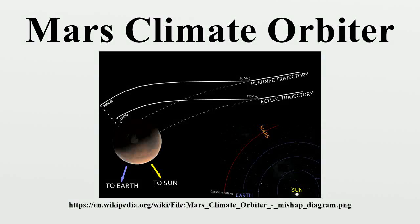The Mars Climate Orbiter was a 338-kilogram robotic space probe launched by NASA on December 11, 1998 to study the Martian climate, Martian atmosphere, and surface changes and to act as the communications relay in the Mars Surveyor 98 program for Mars Polar Lander.